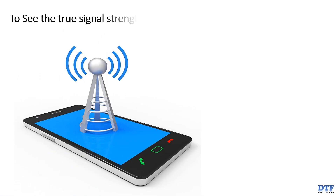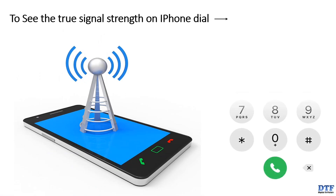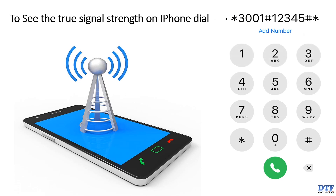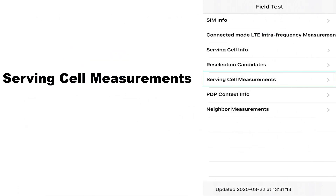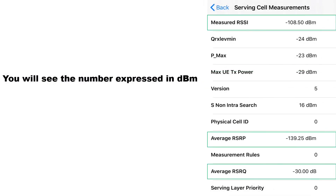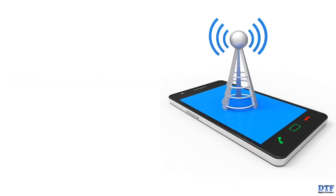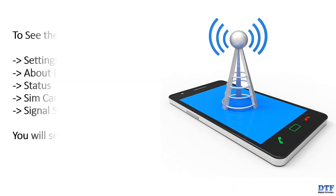To see the true signal strength on an iPhone, dial *3001#12345#* — then the field test page will open. Select 'Serving Cell Measurements' and you will see the number expressed in dBm, which shows the true signal strength.